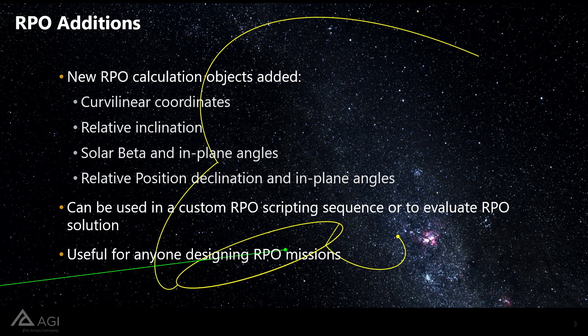Moving on to some additions in RPO context. We've added new RPO-related calculation objects, and you can use these either to build sequences yourself or in reporting contexts to evaluate and improve an RPO mission. We've also modified some of the existing RPO sequences to use these calculation objects instead of doing VGT things. You should see some potential speed-ups as well as reduced scenario clutter when you save things. So if you're designing any kind of RPO mission, these new capabilities will be useful for you.